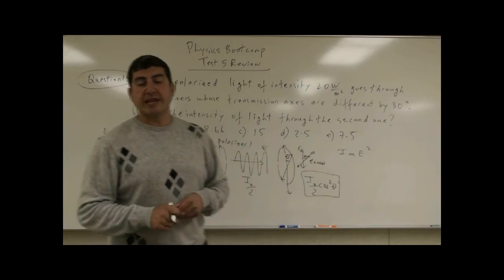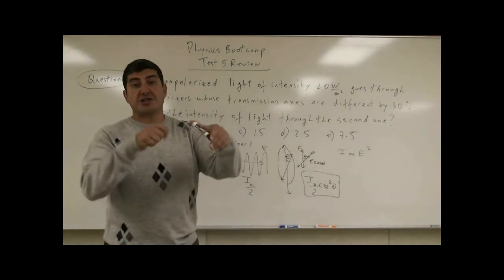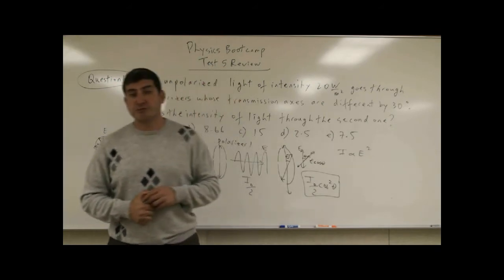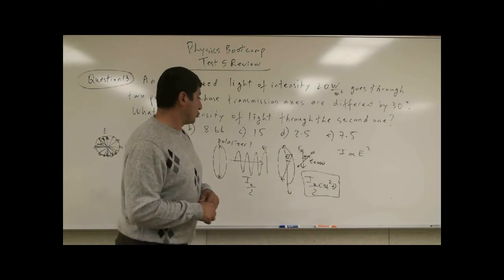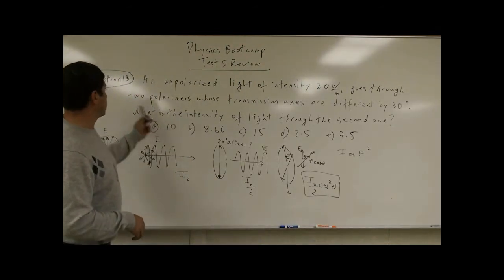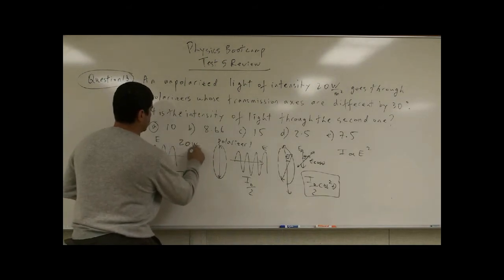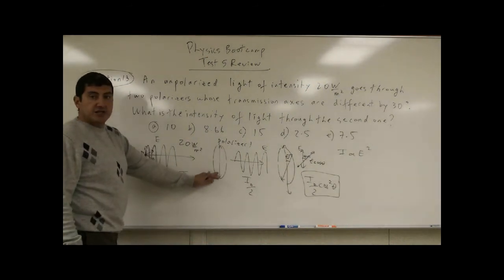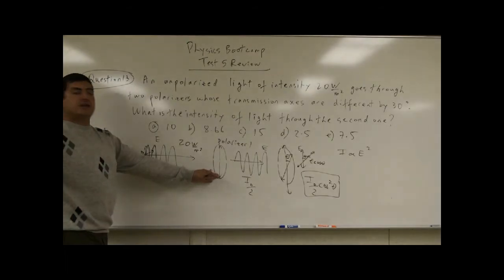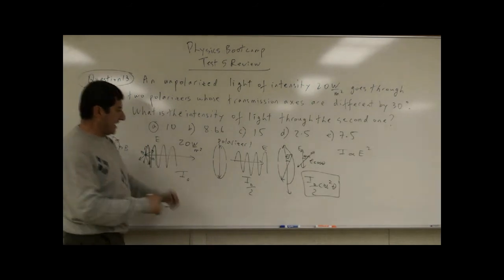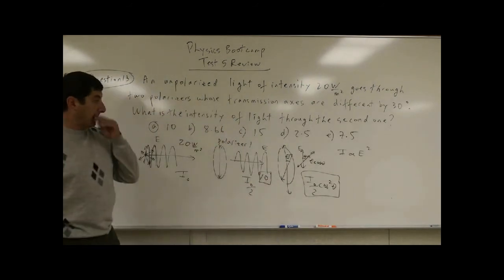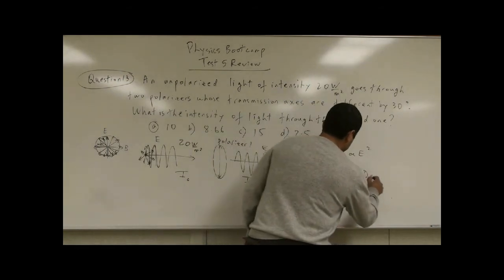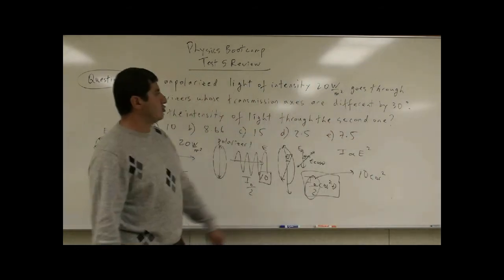I have a demo with polarizers on my YouTube demos playlist where I show you different things — go check it out. Now let's come to this problem. The initial intensity is 20 watts per meter squared. After the first polarizer, half gets through, so that's 10 watts per meter squared. Then we multiply by cosine squared of 30 degrees.